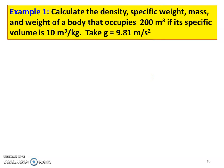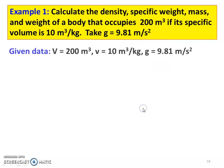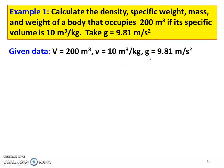First problem: Calculate the density, specific weight, mass, and the weight of a body that occupies 200 meter cube, if its specific volume is 10 meter cube per kilogram. Take G, acceleration due to gravity, as 9.81 meter per second square. Write down the given data: Volume V = 200 m³, specific volume v = 10 m³/kg, g = 9.81 m/s².